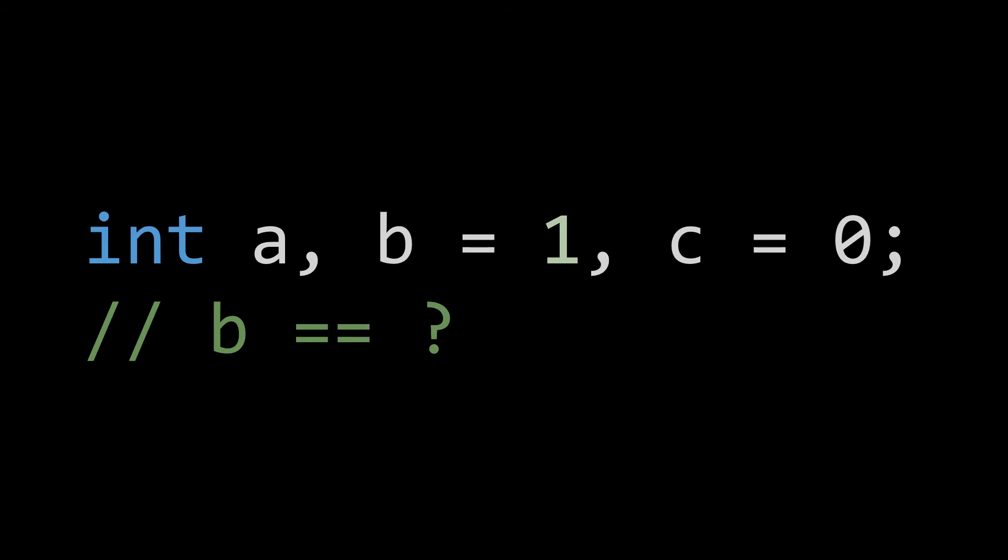I just finished saying that anytime a comma operator is introduced outside list initializations or function parameter lists, it has a defined behavior. That being to evaluate what's on the left and then what's on the right and return what's on the right. Given this, the C++ newcomer would understandably believe that B is initialized to zero. But that isn't the case. Above and beyond the aforementioned properties of the comma operator, we must also consider its precedence. This one is easy. The comma operator has the lowest precedence amongst all operators. That means that in this example, one is assigned to B before C is even initialized.